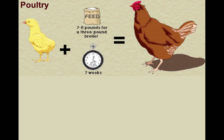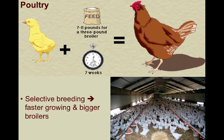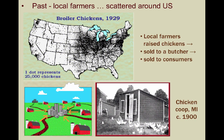Let's take a closer look at the poultry industry and specifically at chickens. These birds were among some of the earliest animals ever domesticated. Through more recent selective breeding, a newborn chick will take between 7 and 8 weeks to grow into a full-grown chicken, also called a broiler. In the past, most chickens were raised by local farmers who sold them to local butchers, who in turn sold them to the local consumers. This map from the Depression era shows chicken raising scattered throughout the U.S., but concentrated around the Midwest.